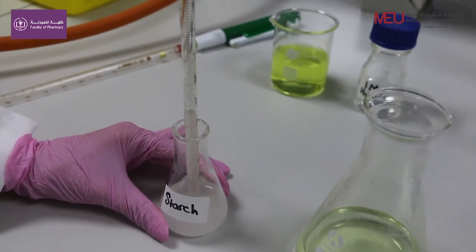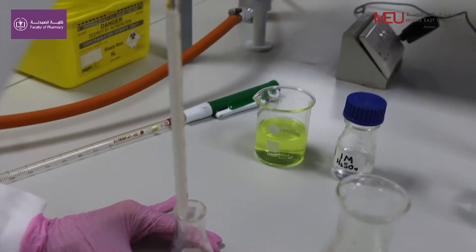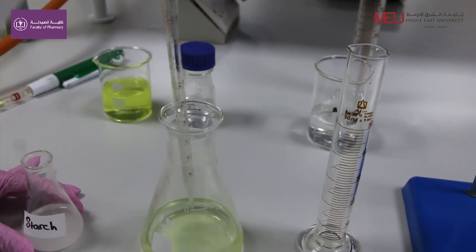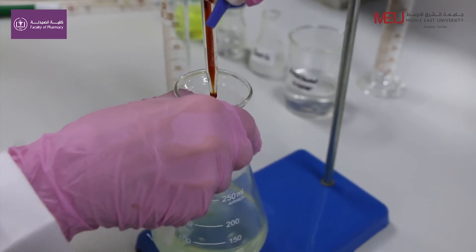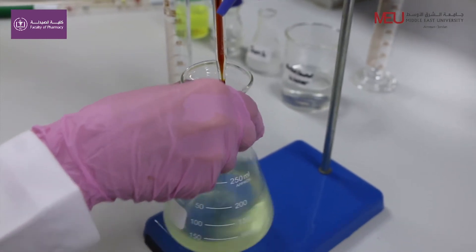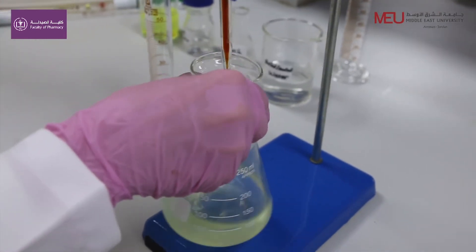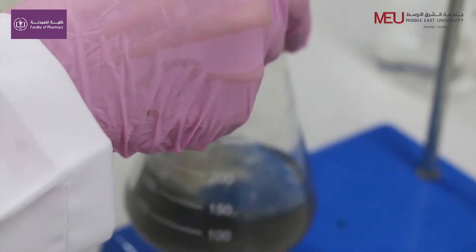Add 5 ml starch indicator. Titrate with 0.05 molar iodine solution. Record your readings and start your calculations.